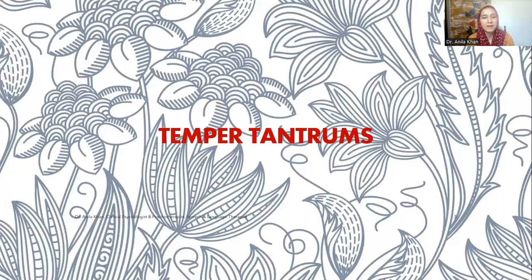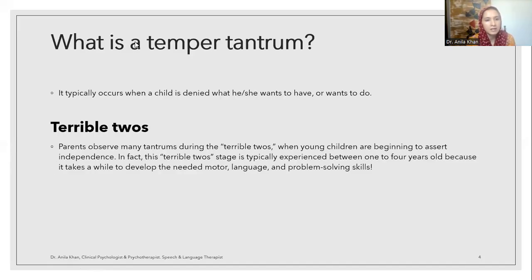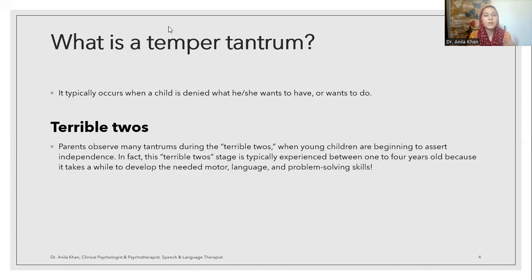Temper Tantrums is a condition that typically occurs when a child is denied what she wants or wants to do. It's a state when the child starts crying, screaming, or maybe throwing stuff on the floor, banging the door, and sometimes hitting himself, or even hitting other people. In different individuals and different children, the temper tantrums and the showing of aggression is different. Let's break down the definition of a Temper Tantrum.